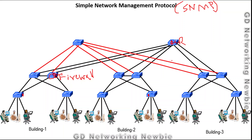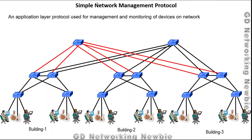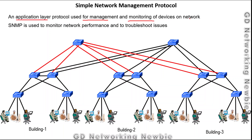We want a central entity from where we can monitor all these devices, manage them, and troubleshoot any problems in the network. For that purpose — for monitoring performance and troubleshooting — we needed a protocol, a set of rules. That protocol is SNMP, which works at the application layer and is used for management and monitoring of networking devices on our network.